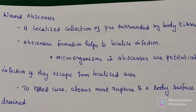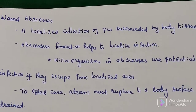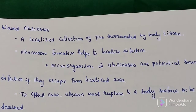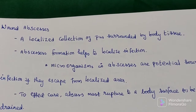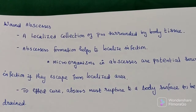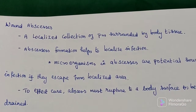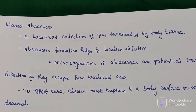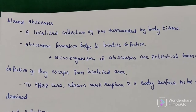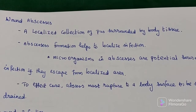Next, wound abscesses. Abscesses involve pathogen contamination, typically bacteria. Wound infection is almost always a bacterial infection. Very few viruses, such as HIV and other bloodborne viruses, can infect you — bacteria is the main way infection spreads. A few fungi also cause wound infection. An abscess is a localized collection of pus surrounded by body tissue. Abscess formation helps to localize the infection. Microorganisms in abscesses are a potential source of infection if they escape from the localized area. To effect a cure, an abscess must rupture to a body surface or be surgically drained.